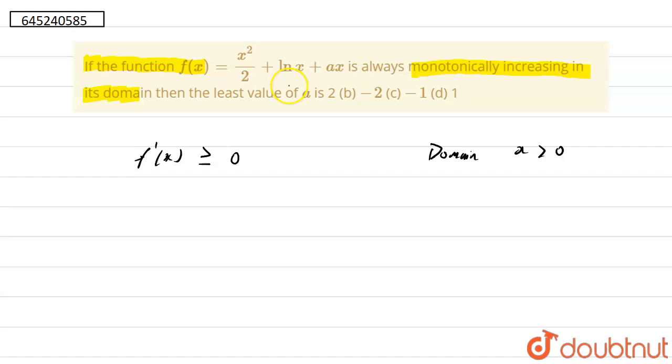Now if we take the derivative of this, this comes to be x plus 1 upon x plus a greater than or equal to 0